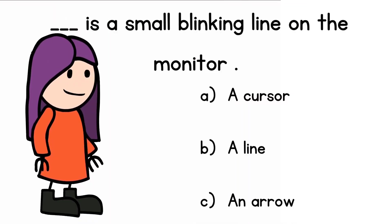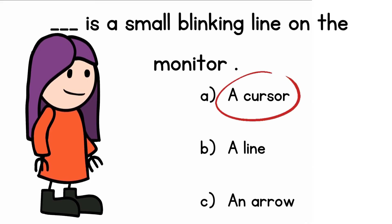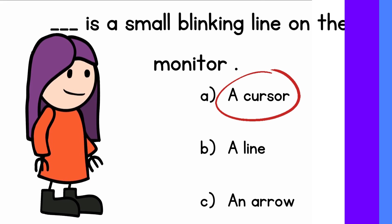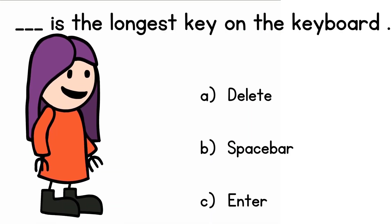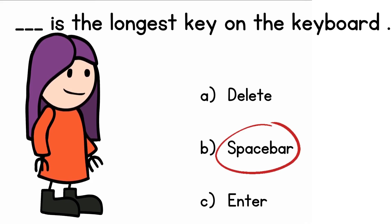A cursor is a small blinking line on the monitor. The answer is a cursor. The spacebar is the longest key on the keyboard. The answer is spacebar.